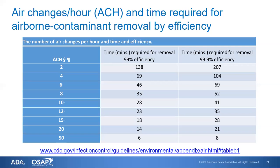A very common air exchange rate is six per hour, and that would take 46 minutes for 99% of the air to be exchanged in that room at that rate. That's not to say you necessarily have to leave a room empty for that many minutes — it's just saying that if you want to know how long it takes to completely change over the air in a room, this chart will give you that information.